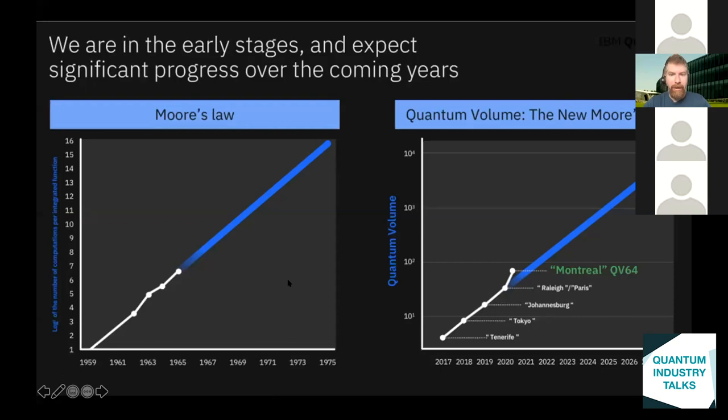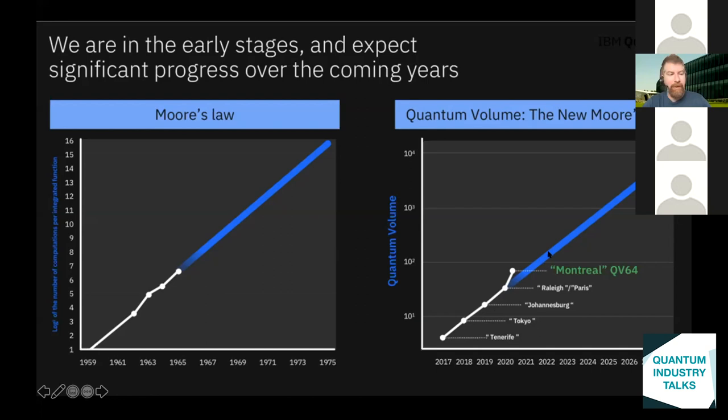Our most recent result was quantum volume 64. Quantum volume 32 was achieved earlier in January of this year, when people started making analogies with Moore's law — Gordon Moore, the famous CEO of Intel, observed exponential growth in classical computation density. We predicted an exponential increase of quantum volume, and we actually achieved quantum volume 64 ahead of schedule, which we're pretty happy about.